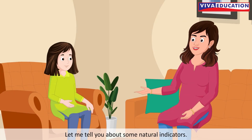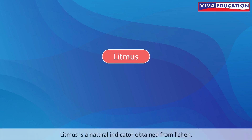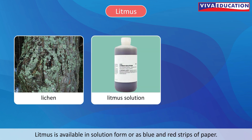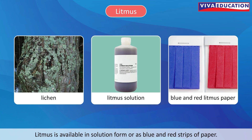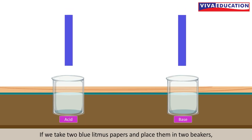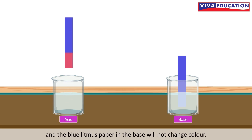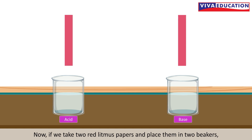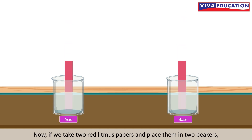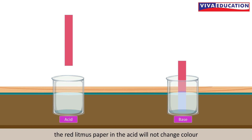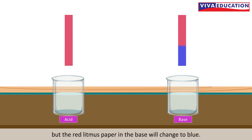Let me tell you about some natural indicators. Litmus is a natural indicator obtained from lichen. Litmus is available in solution form or as blue and red strips of paper. If we take two blue litmus papers and place them in two beakers — one with an acid and one with a base — the blue litmus paper in the acid will change to red, and the blue litmus paper in the base will not change color. If we take two red litmus papers and place them in two beakers — one with an acid and one with a base — the red litmus paper in the acid will not change color, but the red litmus paper in the base will change to blue.